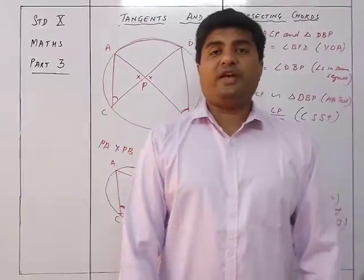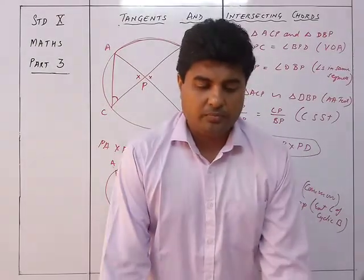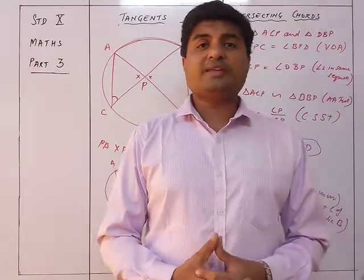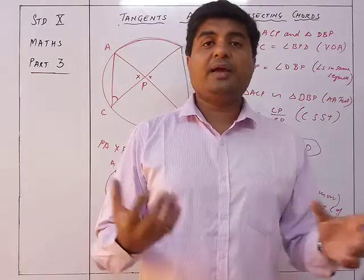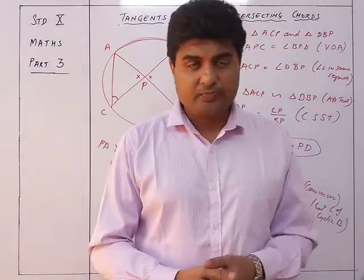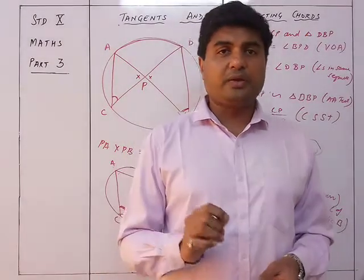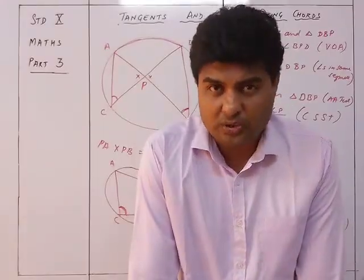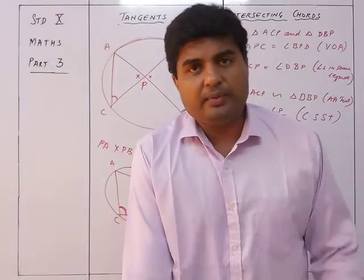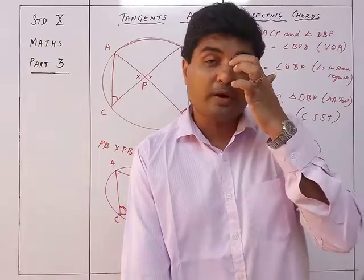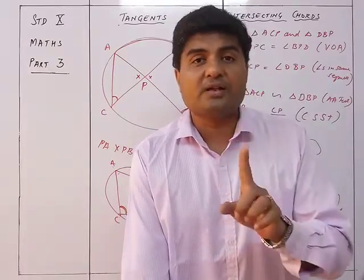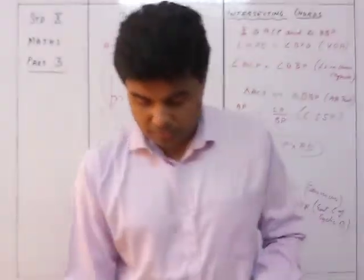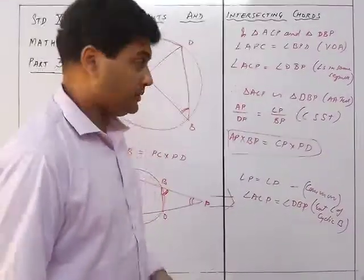Now we come to a very, very important theorem that is normally missed while solving problems — students don't know which formula or theorem to apply. Please be very attentive. This theorem is called the angles in the alternate segments theorem. The proof is slightly tricky, but most importantly you need to understand which two angles are equal, because they are in different segments.